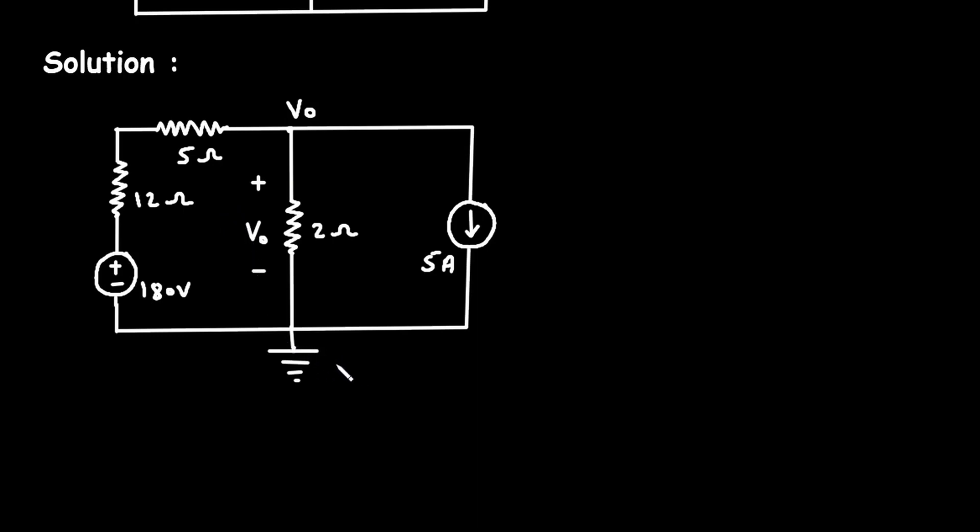Since this is a reference node or ground node, we have to assume all the currents towards this reference node. So, let's say this current is current I1, and this current is current I2.